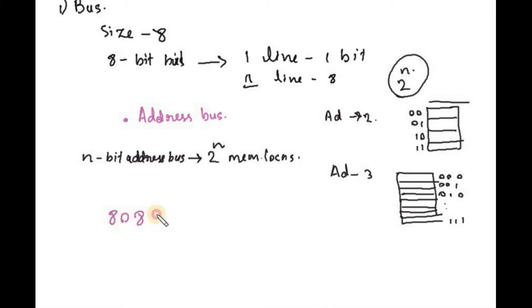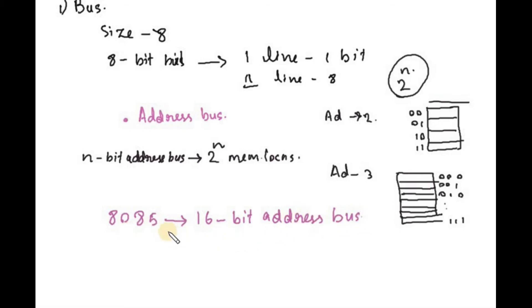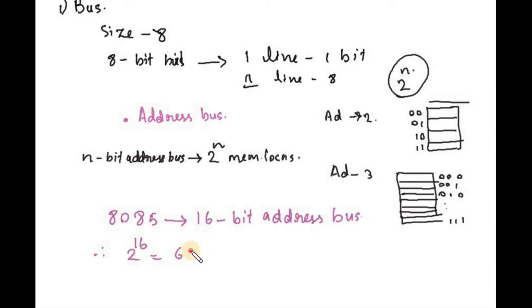The 8085 microprocessor has a 16-bit address bus. With a 16-bit address bus, it can access 2 raised to 16, which is equal to 65,536 memory locations.